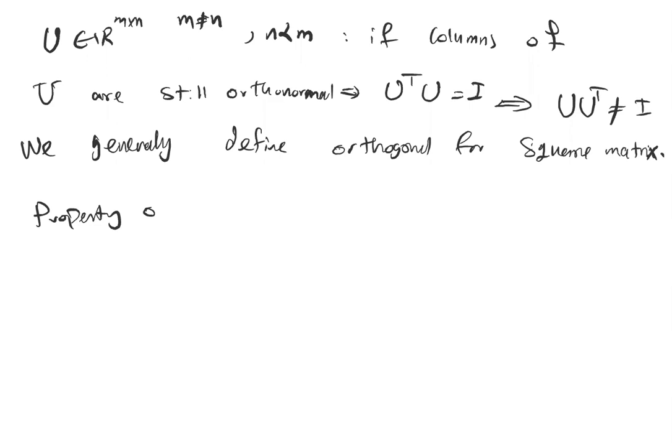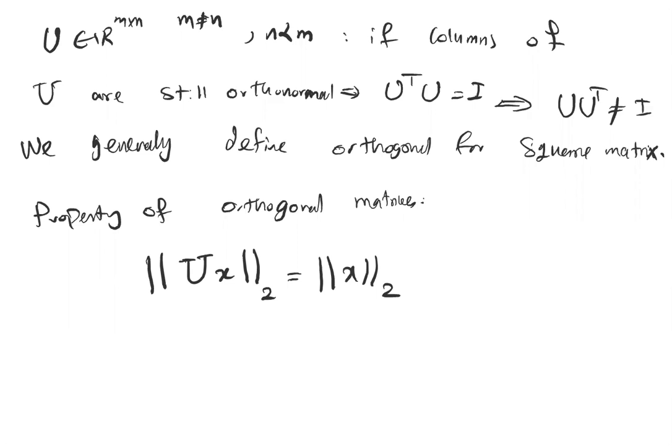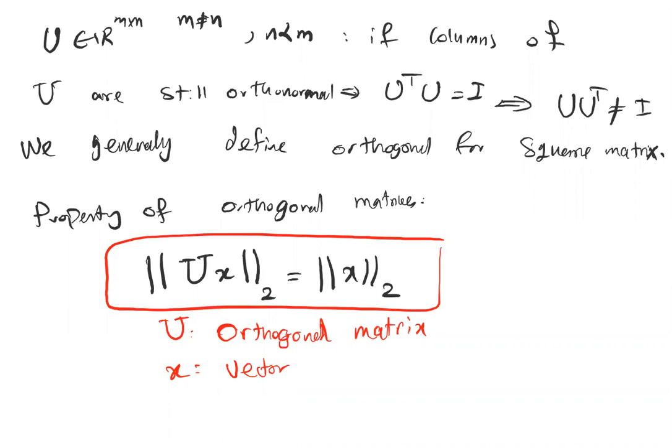Another important property of orthogonal matrices is that when we apply them to a vector they don't change the Euclidean norm. So the Euclidean norm of orthogonal matrix U multiplied by vector x is equal to the Euclidean norm of vector x. The Euclidean norm is not affected.